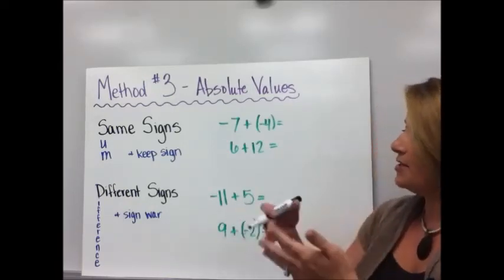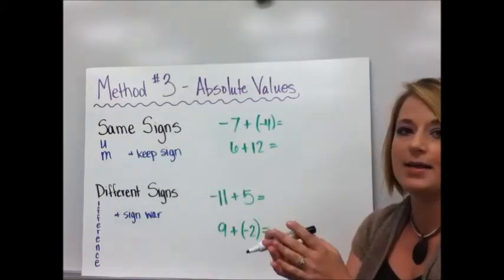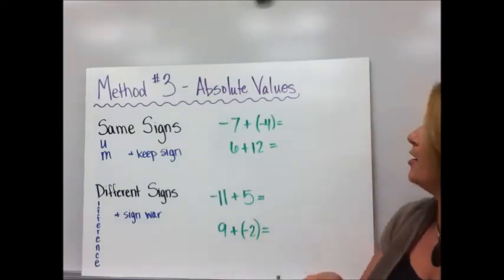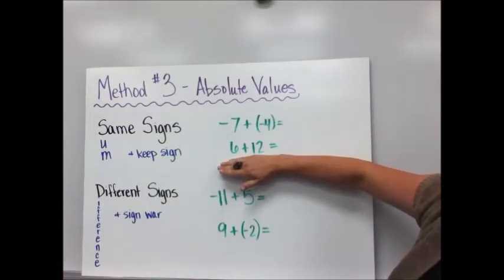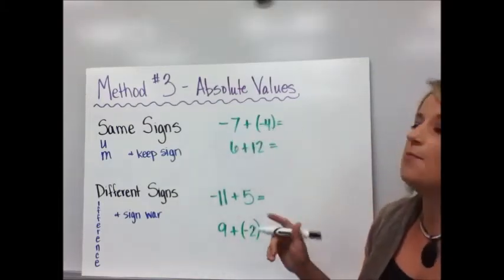So something that you've probably noticed is if you, for some reason, didn't have the different signs, like you had the same signs. If we had used counters, nothing's going to cancel out. You're just combining them all together. Like I said, think back to the teddy bear counters you had in kindergarten. Plain positive numbers, six plus twelve. What did you do? You just added them together. With a negative, that would work the same way.